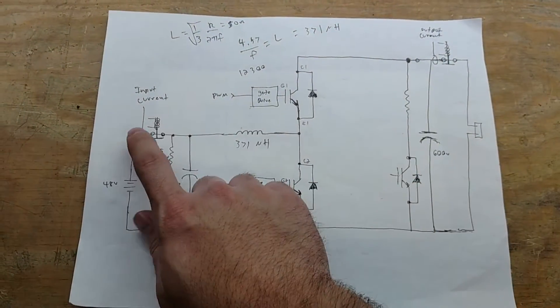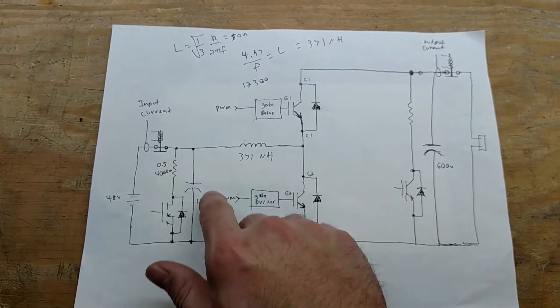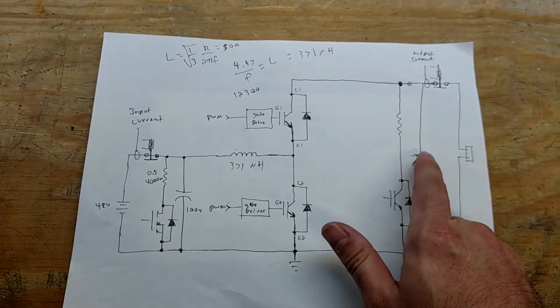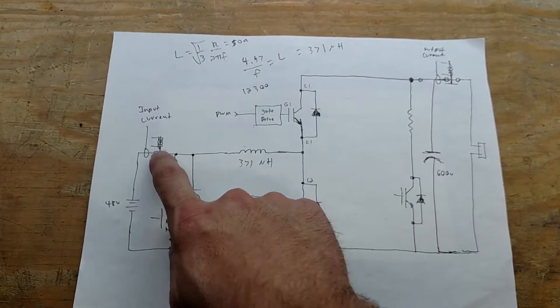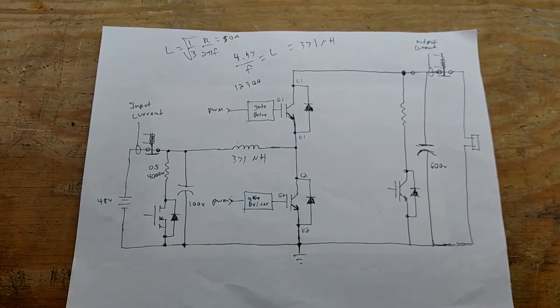For these contactors, if we close them, we're going to charge up these big caps and we'd have a bunch of inrush current. We could weld the contacts on the contactors. So what we need to do is pre-charge.